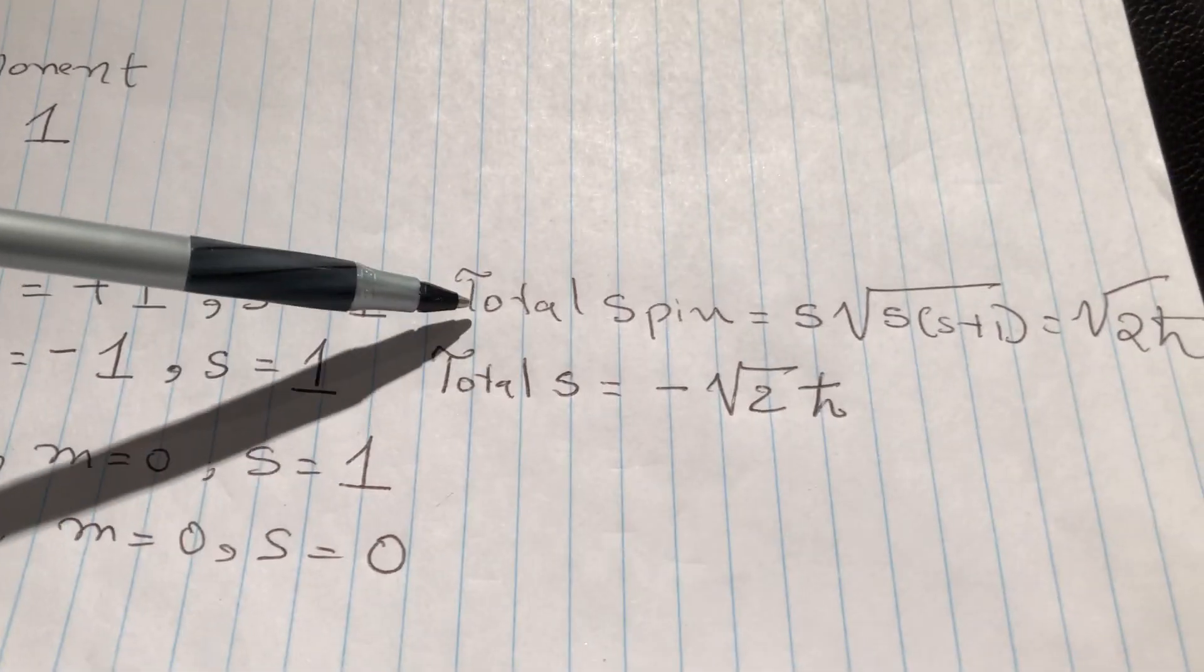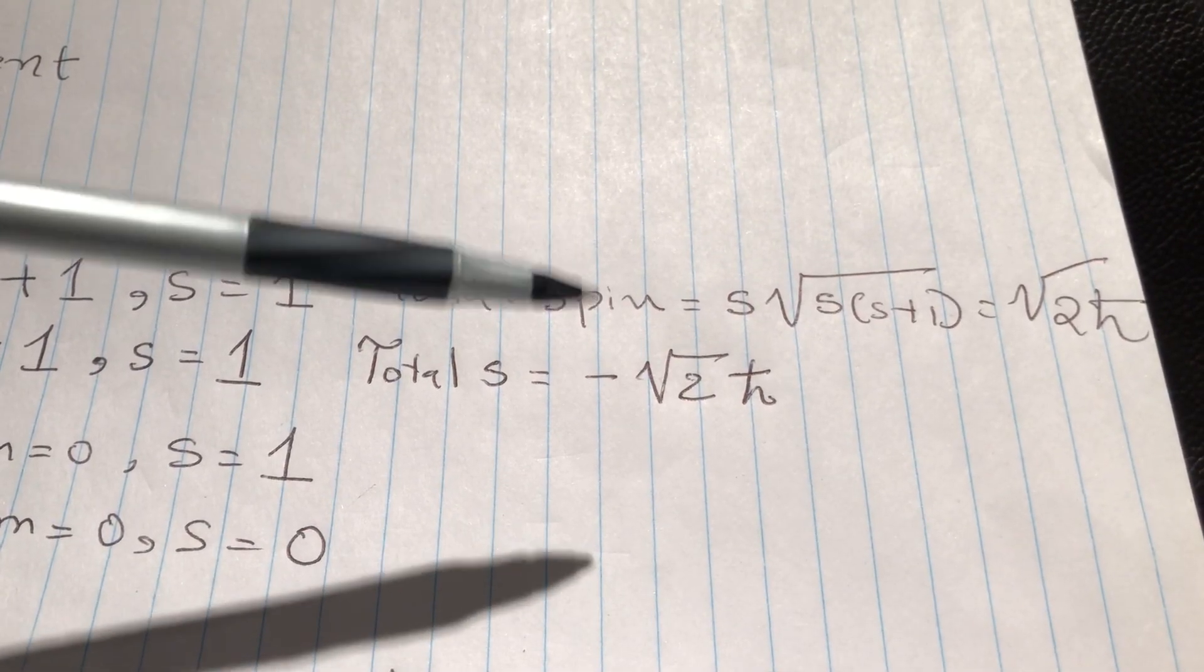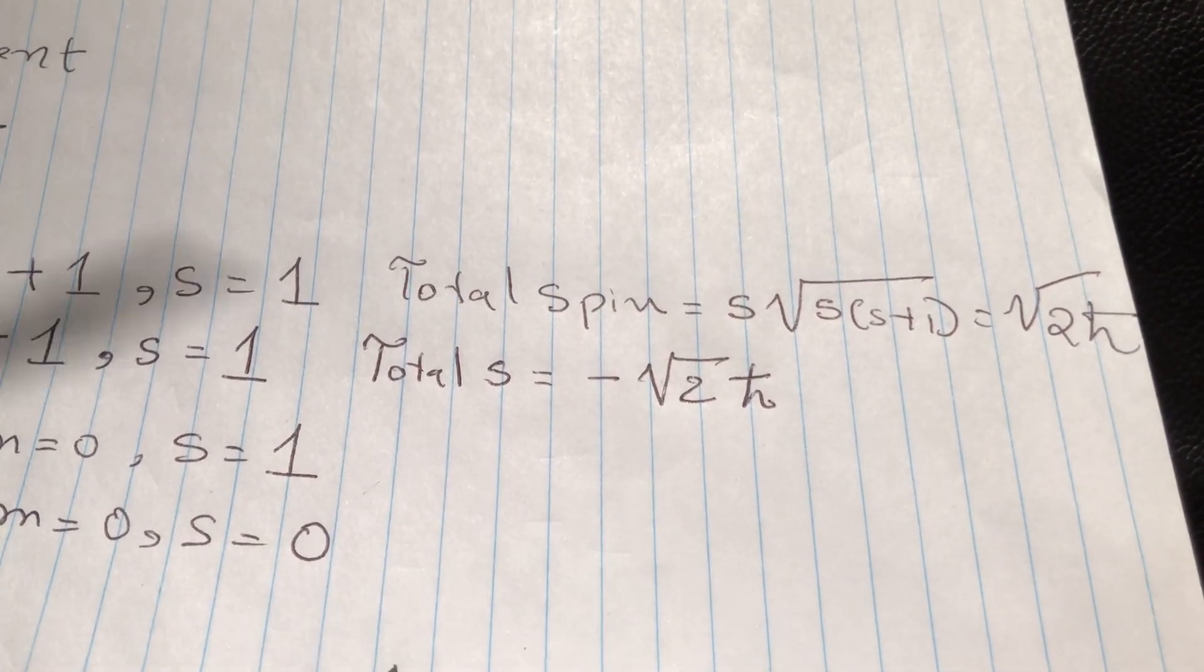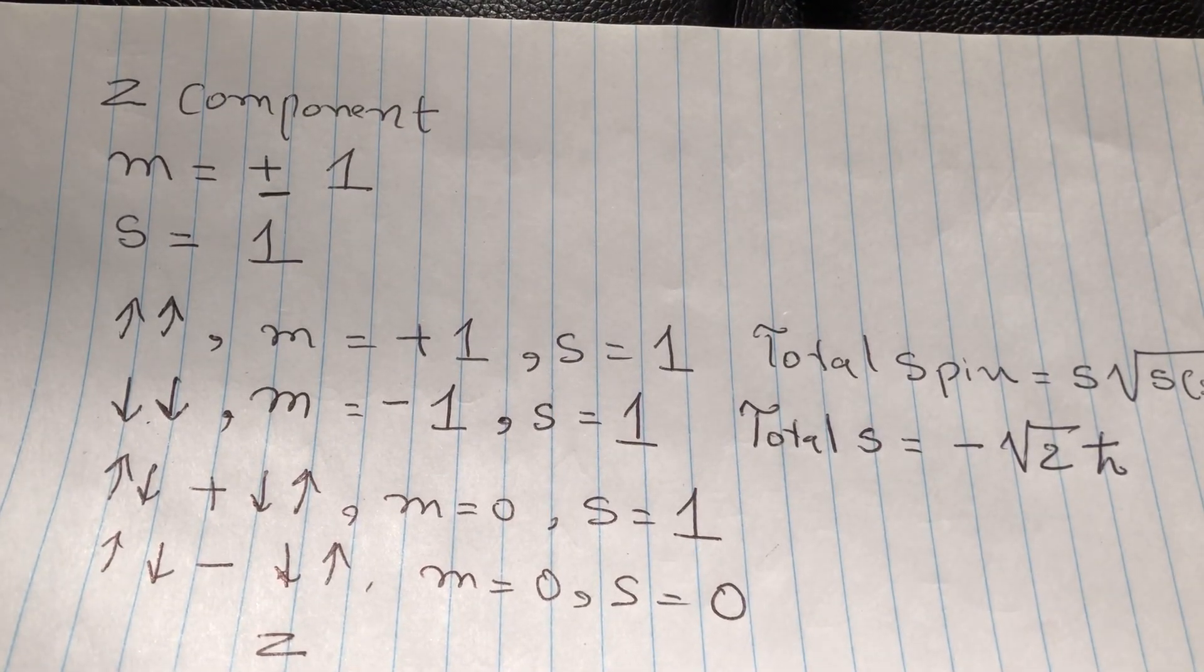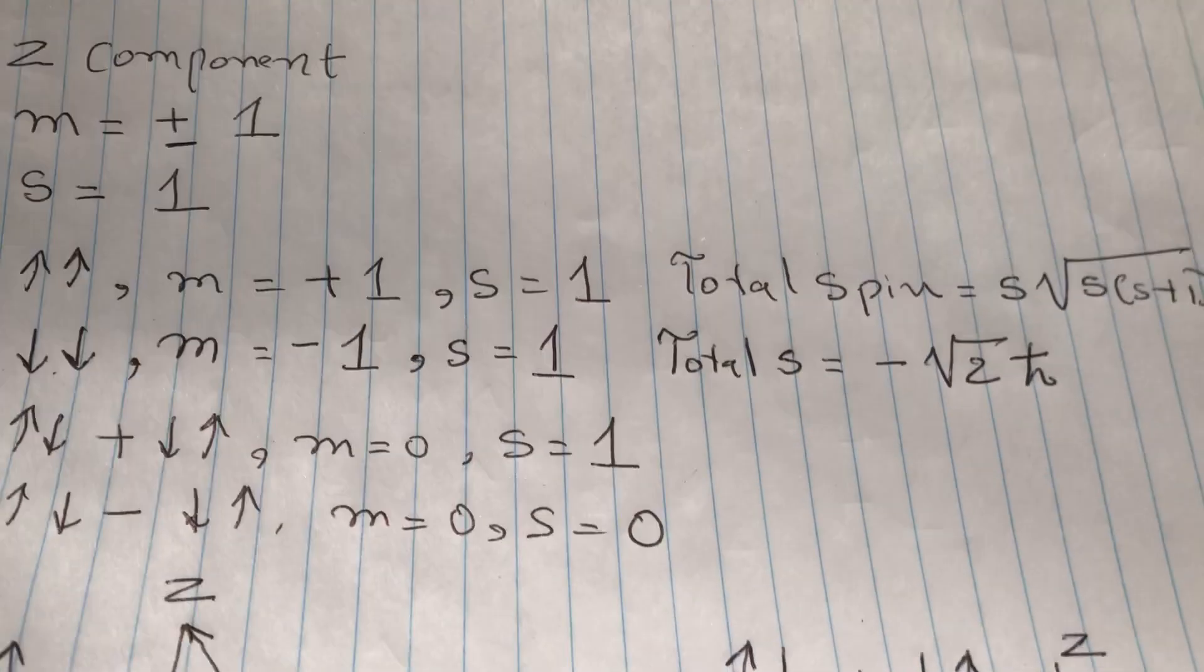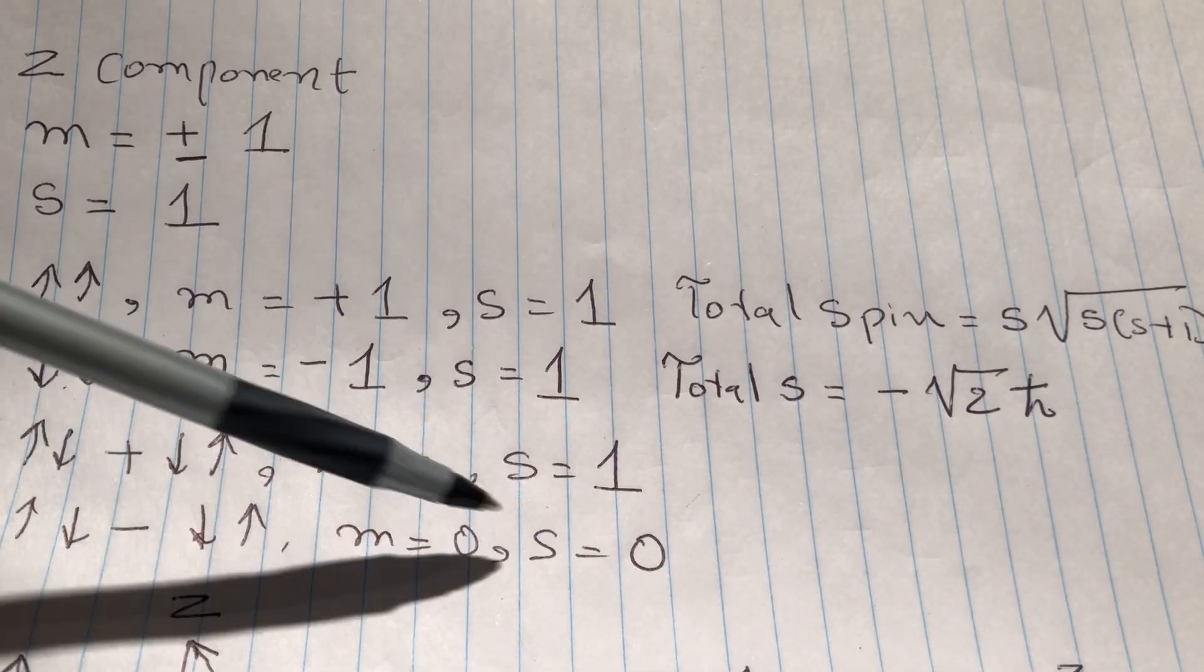There is no plus or minus sign here and the total spin is given by this formula. So s, underscore root s, s plus one, which obviously if s is one, it will give under square root two h as the total answer. Similarly with the down-down state, you will get minus square root two as the answer. Here you have zero and this is one, this is zero.